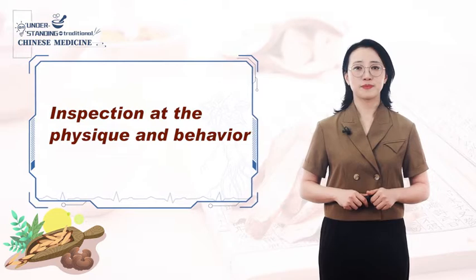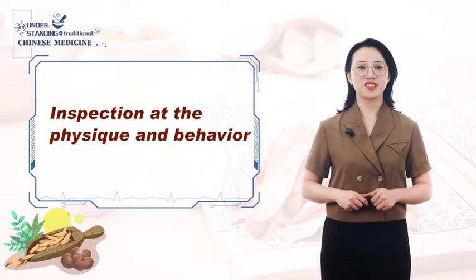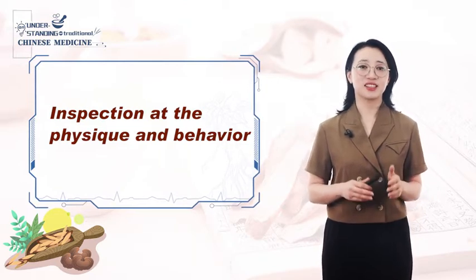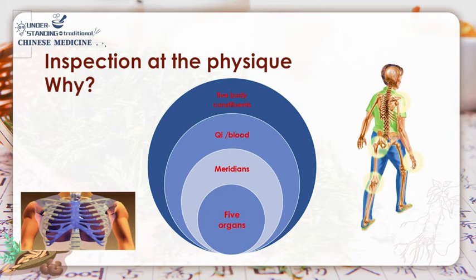The third part of inspection method is the inspection of the physical and behavior. Why should we focus on the physical and behavior? Let's look at this picture. Through the meridians, and by the transporting and transmission of qi and blood, the inner zhangfu organs connect our skin, blood vessels, muscles, bones, and tendons from inside to outside.